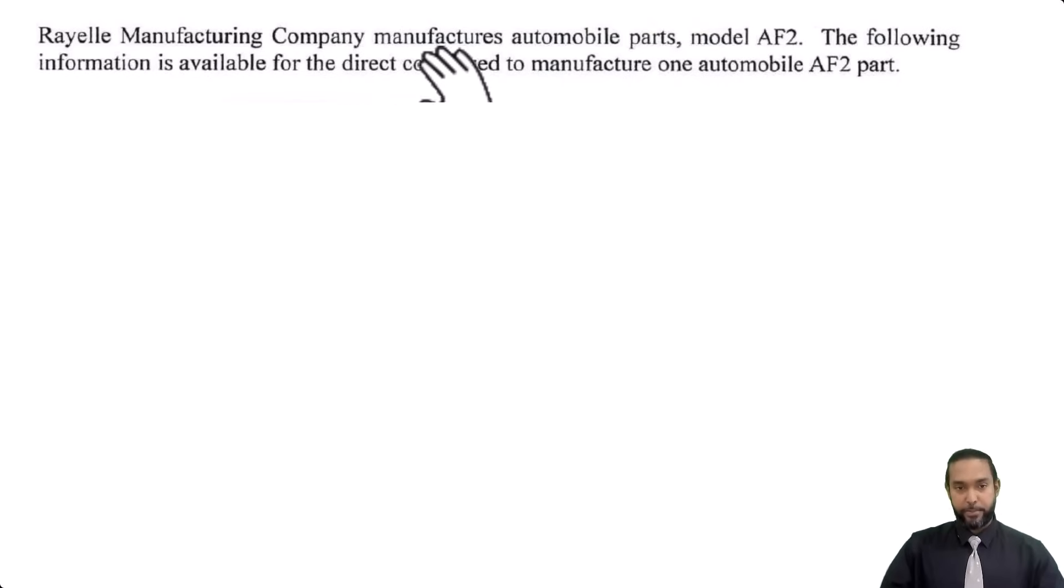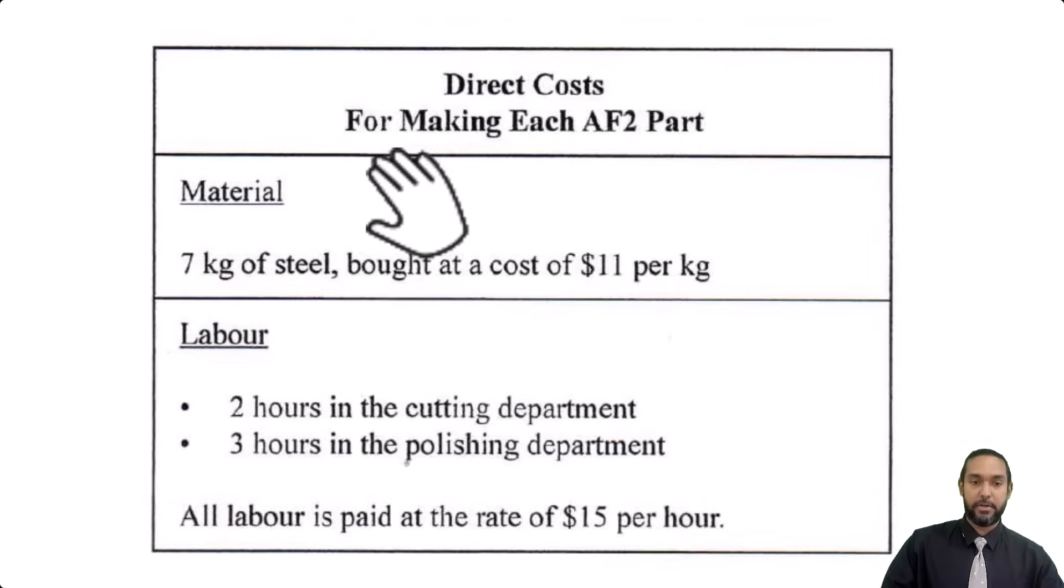Okay, so it says, Rael Manufacturing Company manufactures automobile parts model AF2. The following information is available for the direct costs used to manufacture one automobile AF2 part. So we have direct costs for making each AF2 part. Materials: seven kilograms of steel, bought at a cost of $11 per kilogram.